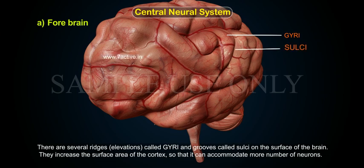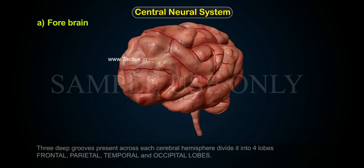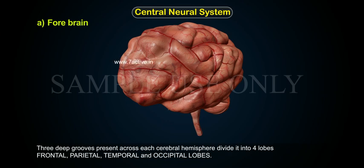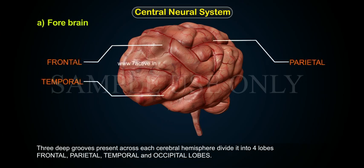Gyri and sulci increase the surface area of the cortex so that it can accommodate more number of neurons. Three deep grooves present across each cerebral hemisphere divide it into four lobes: frontal, parietal, temporal and occipital lobes.